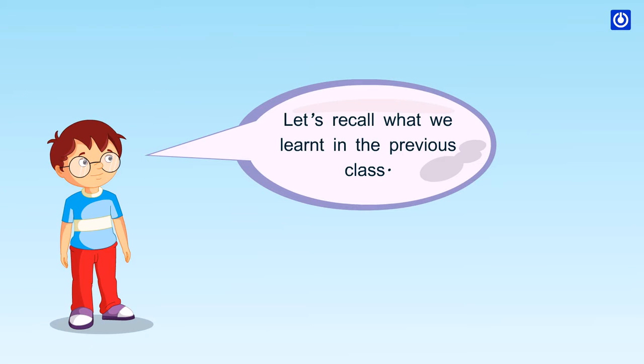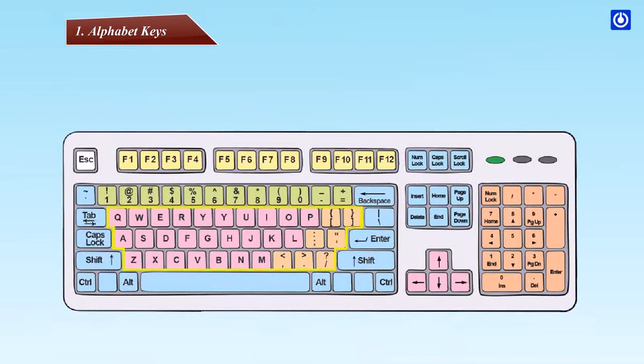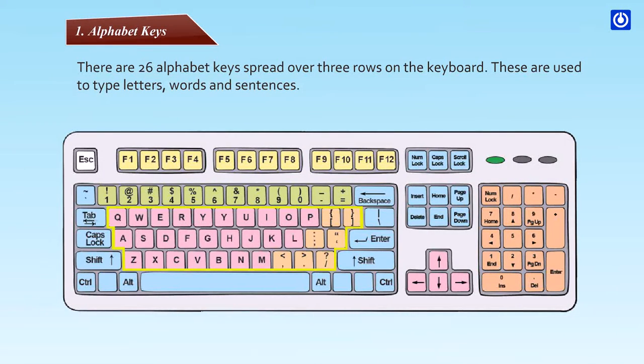Let's recall what we learned in the previous class. Alphabet keys: there are 26 alphabet keys spread over three rows on the keyboard. These are used to type letters, words and sentences.